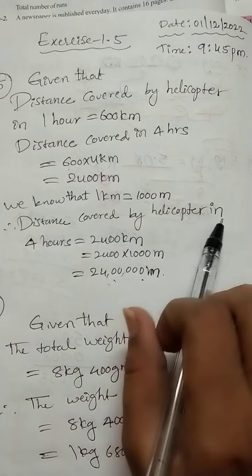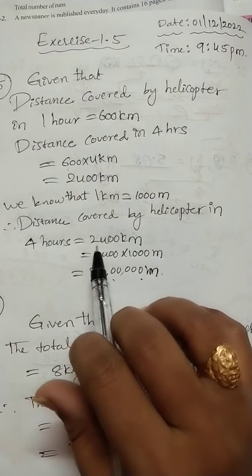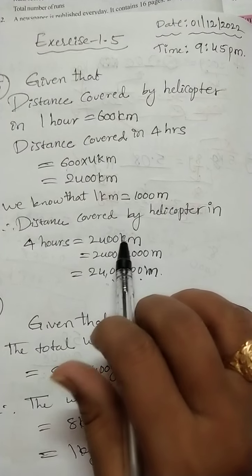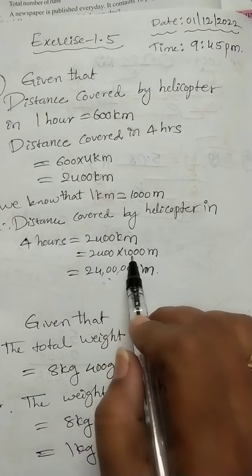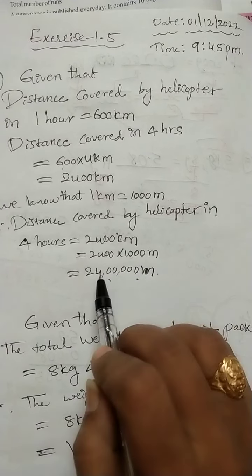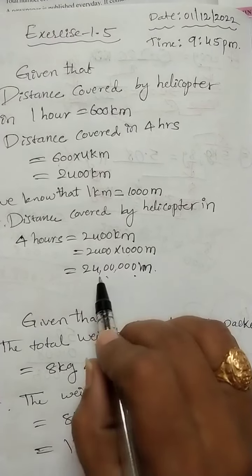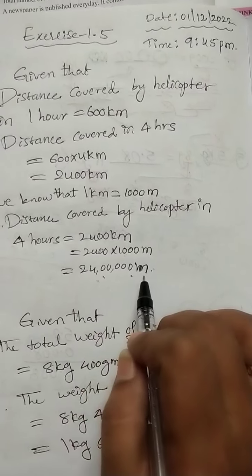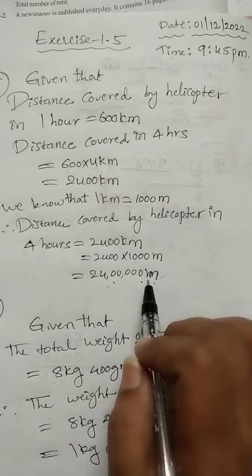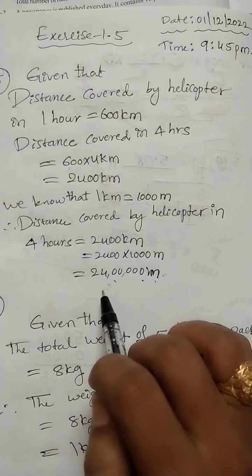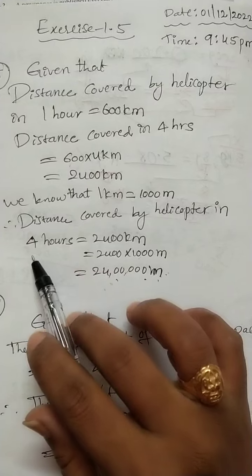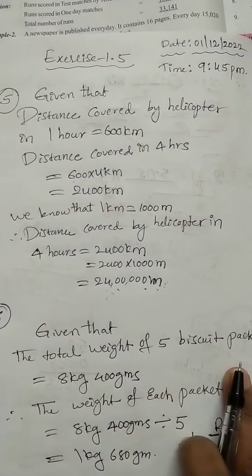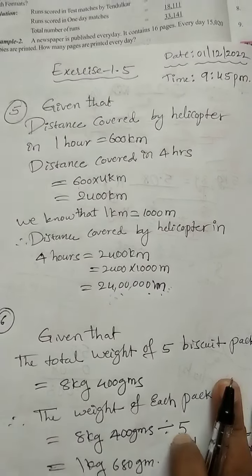Distance covered by helicopter in 4 hours equals 2400 kilometers. We should convert kilometers into meters, so multiply with 1000. After multiplying, you get 2400 meters. Distance covered by helicopter in 4 hours is 2400 meters. This is the 5th question solution.